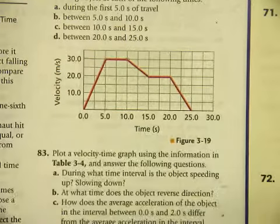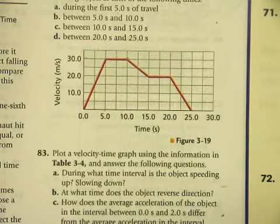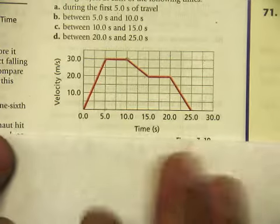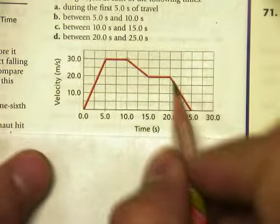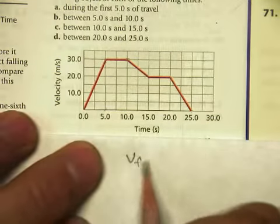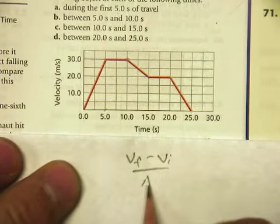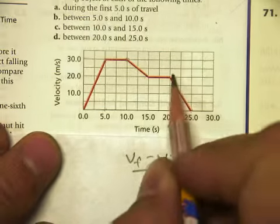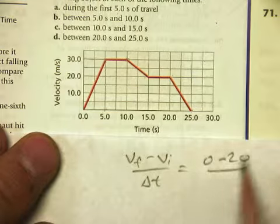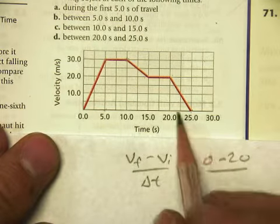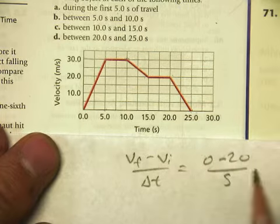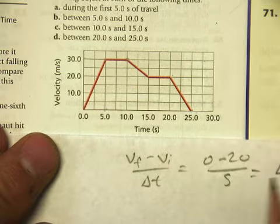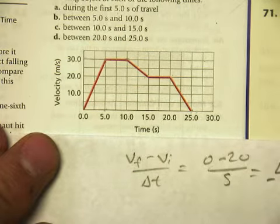And then part D, between 20 and 25. VF minus VI over delta T. My final velocity is 0, my initial velocity is up here at 20. So 25 minus 20 is 5 seconds, so that's negative 4.0 meters per second squared.